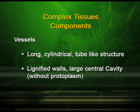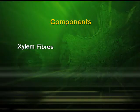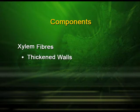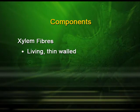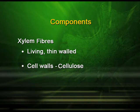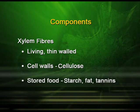Vessels have lignified walls and a large central cavity without protoplasm, and they are interconnected through perforations in their common walls. Xylem fibers have thickened walls and may be septate or aseptate. Xylem parenchyma cells are living cells with thin walls made up of cellulose, and the stored food includes starch, fat, and tannins.